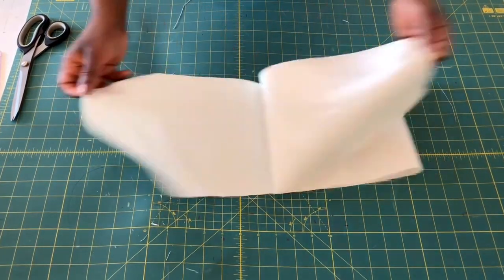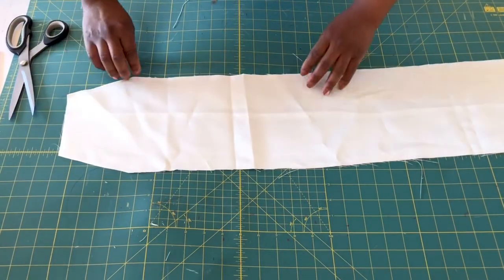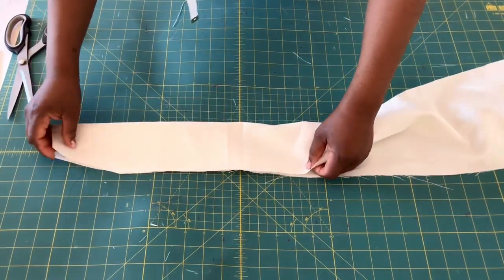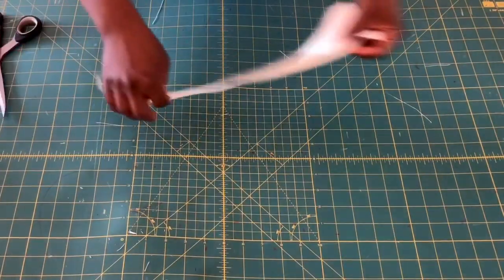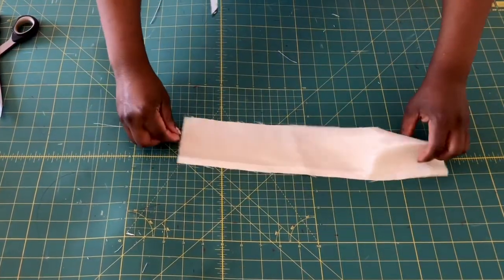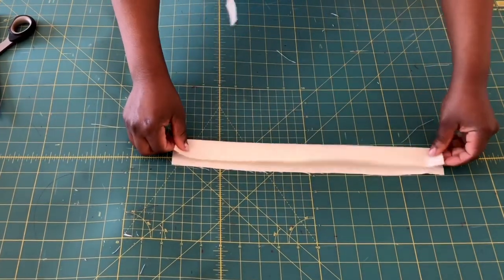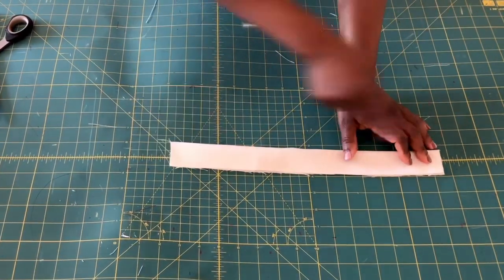After cutting, open up your fabric and fold the right sides together like so, and run a straight stitch at a quarter of an inch all the way. I'm also going to do the same thing to the elastic case - fold the right sides together, run a quarter of an inch, and turn it inside out when I finish.